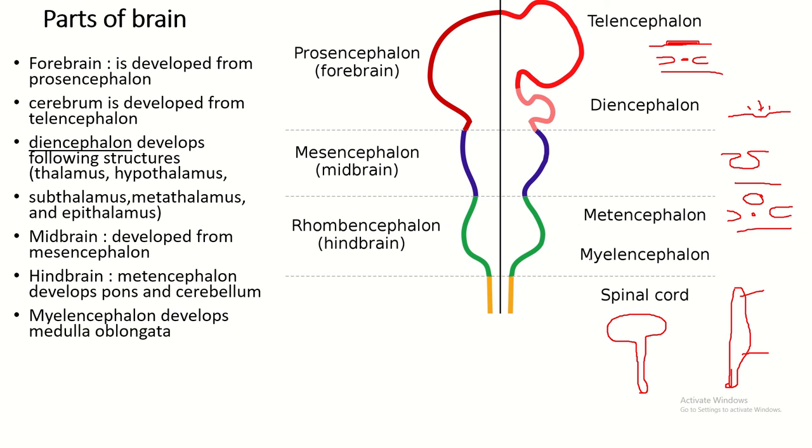From metencephalon, the pons and cerebellum are developed, and from myelencephalon, the medulla oblongata is formed.